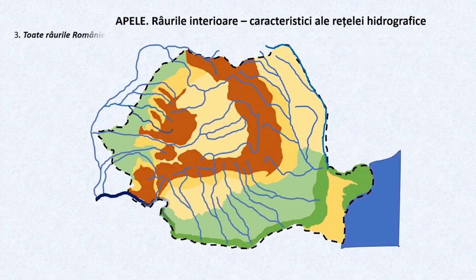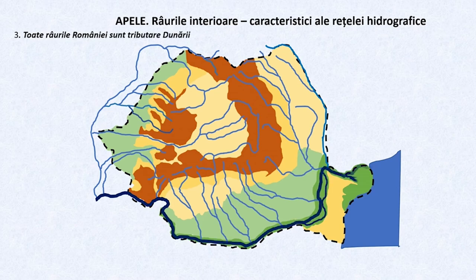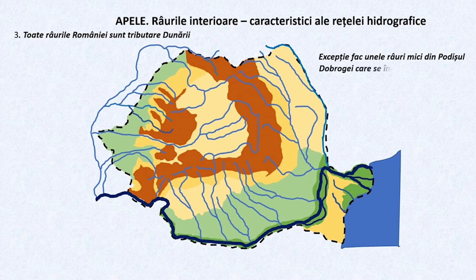O ultimă caracteristică a rețelei hidrografice este că, direct sau indirect, toate râurile României sunt tributare Dunării — sunt colectate deci de Dunăre. Excepție de la această caracteristică o au unele mici râuri dobrogene ce se îndreaptă către litoralul Mării Negre.